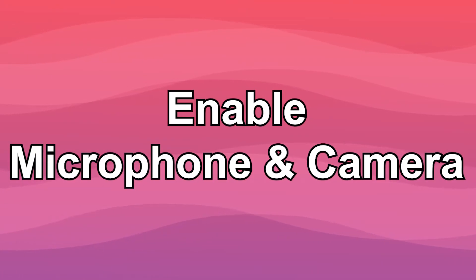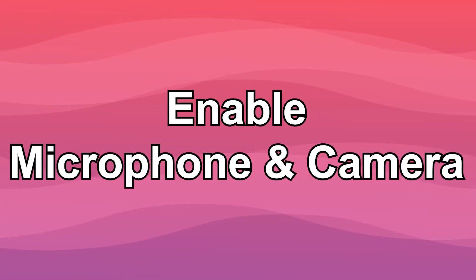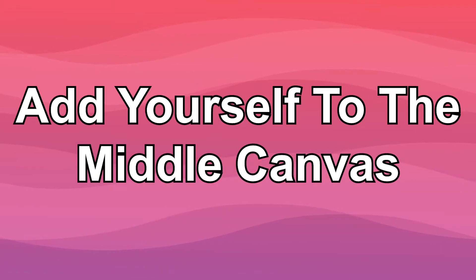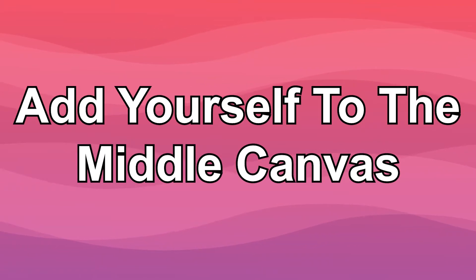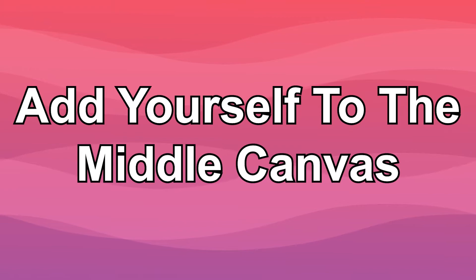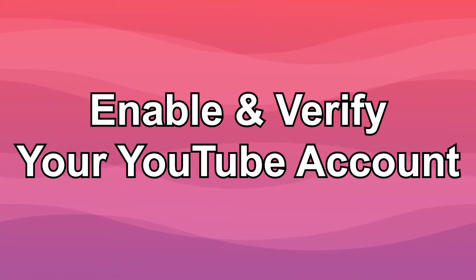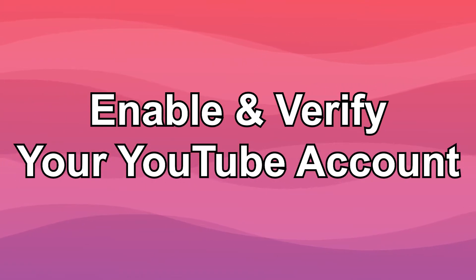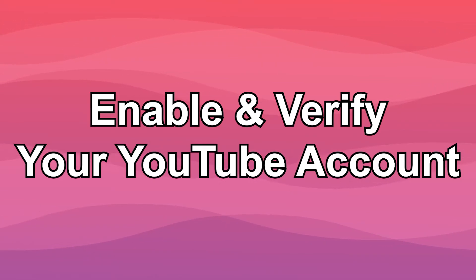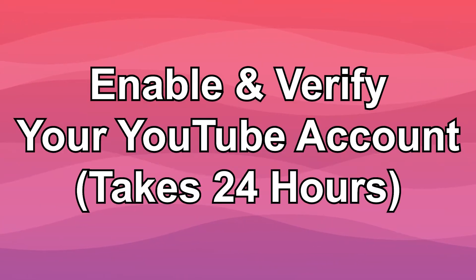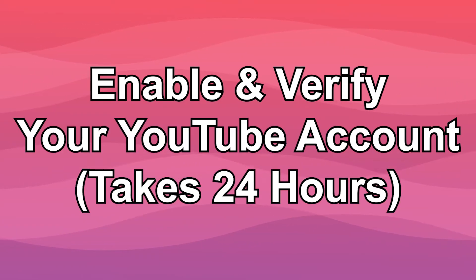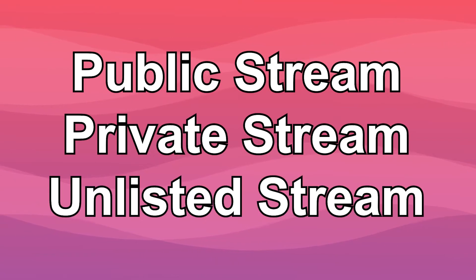To recap: make sure you enable your microphone and camera. Add yourself to the middle of the canvas by clicking on your face in the left bar. Make sure that your YouTube account is enabled for live streaming — it's a one-time step and it only takes 24 hours in advance to get verified. Then pick whether you want your YouTube stream to be public, private, or unlisted, and have some fun. You're good to go.